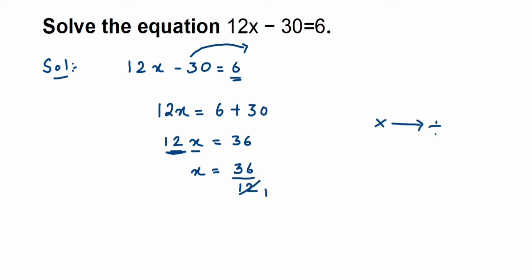12 threes are 36, so therefore the x value is equal to 3. That's it — this was a simple question. I hope it's clear. In case you have any questions or doubts, you can drop a comment below. Thank you so much for watching.